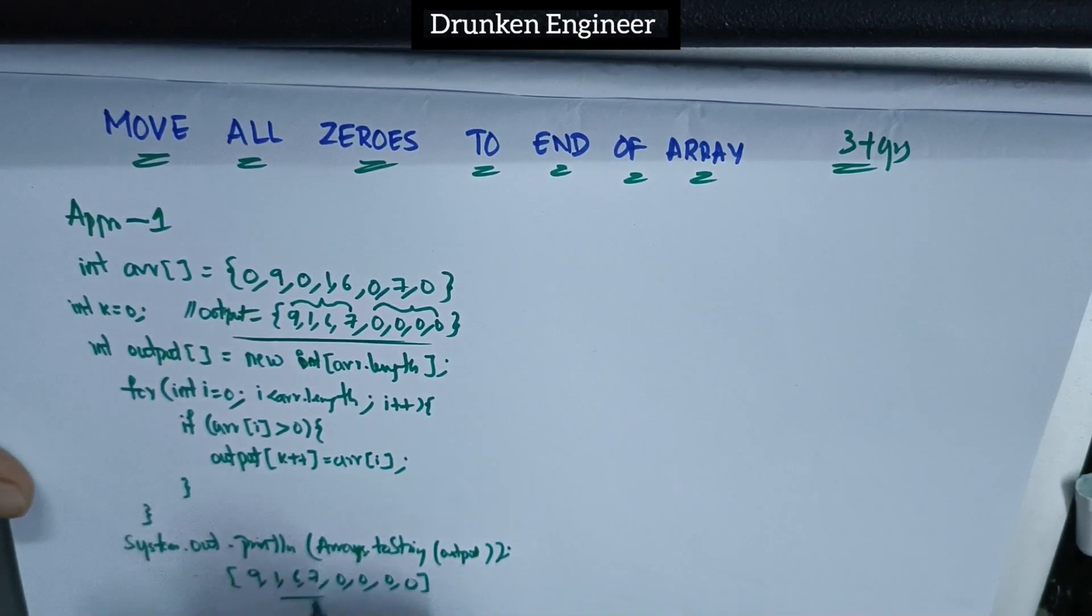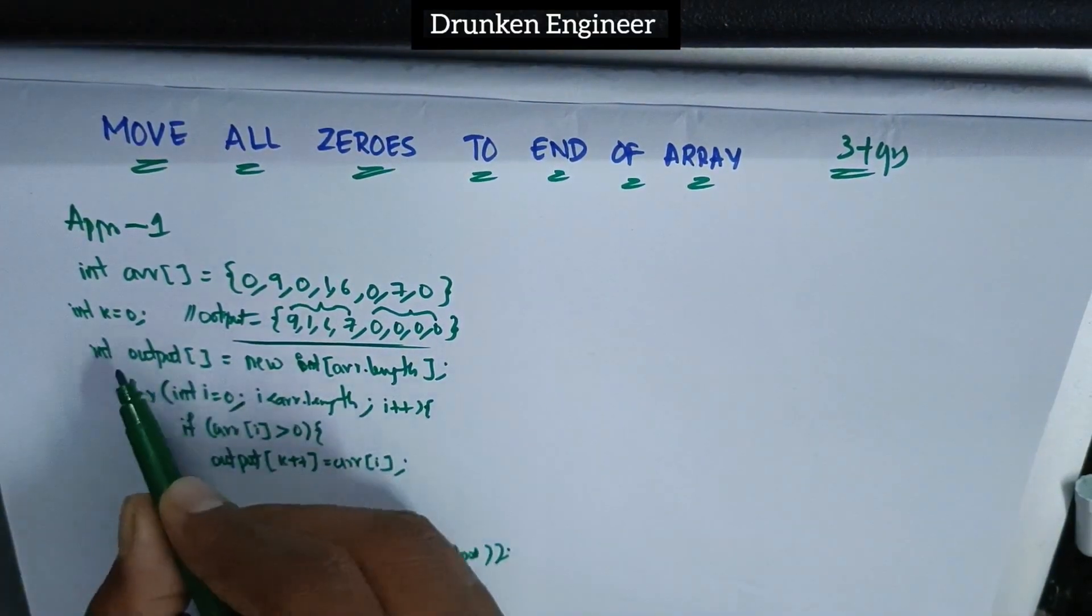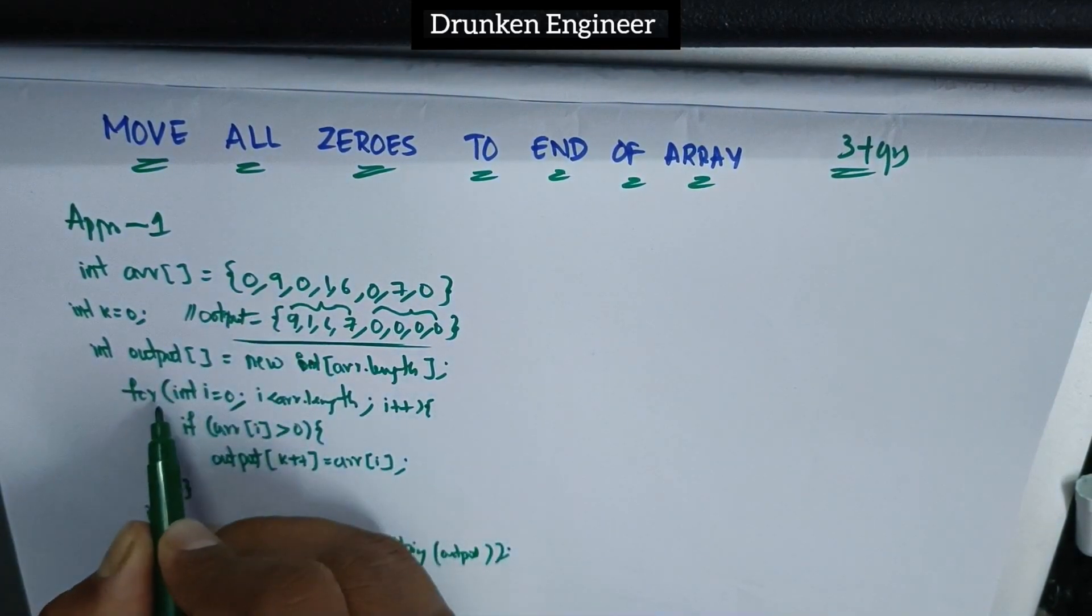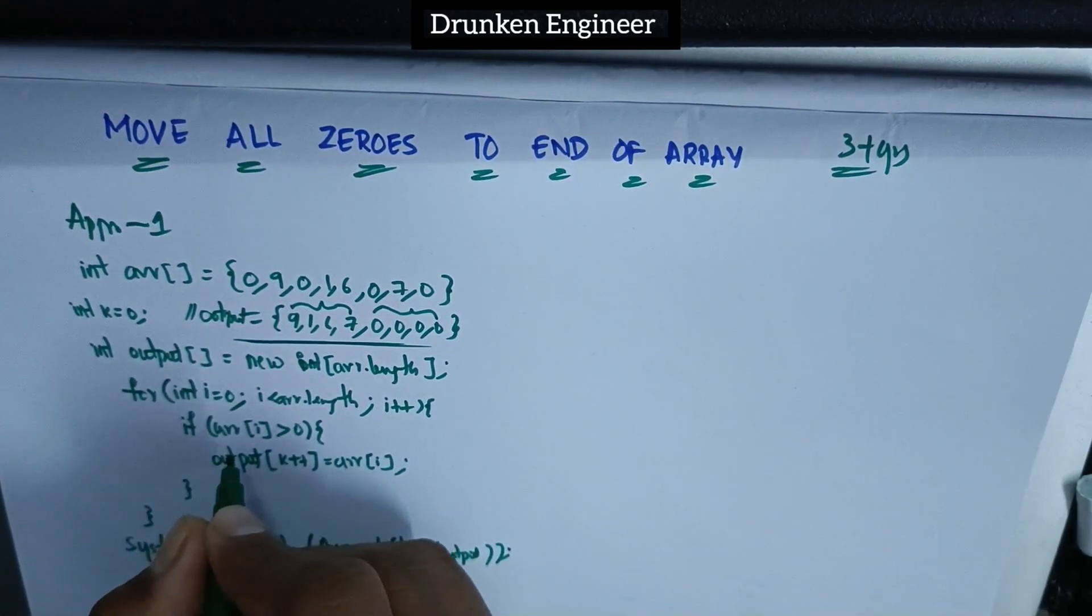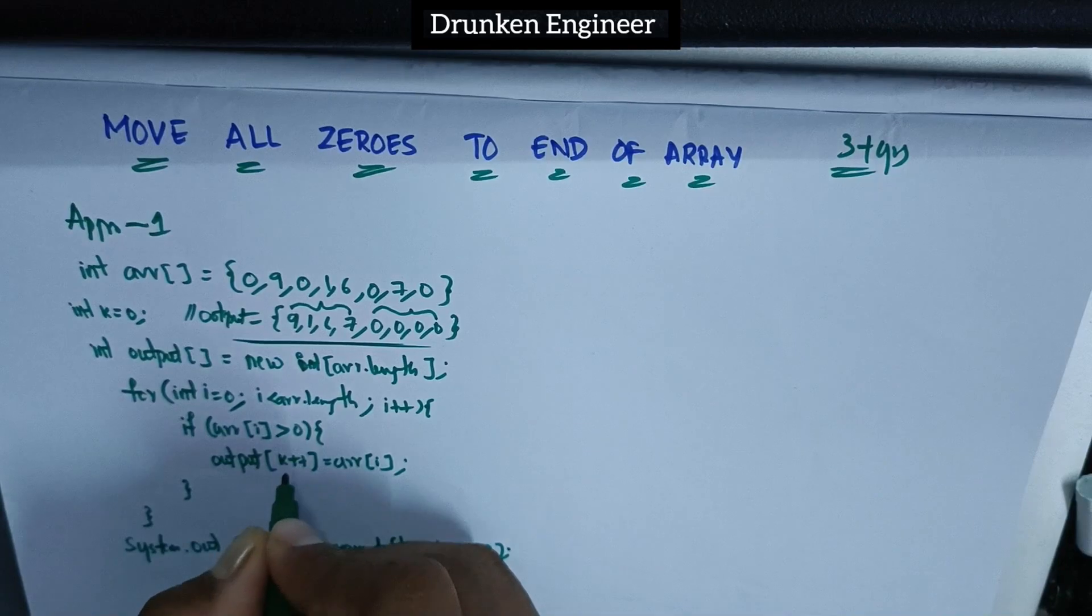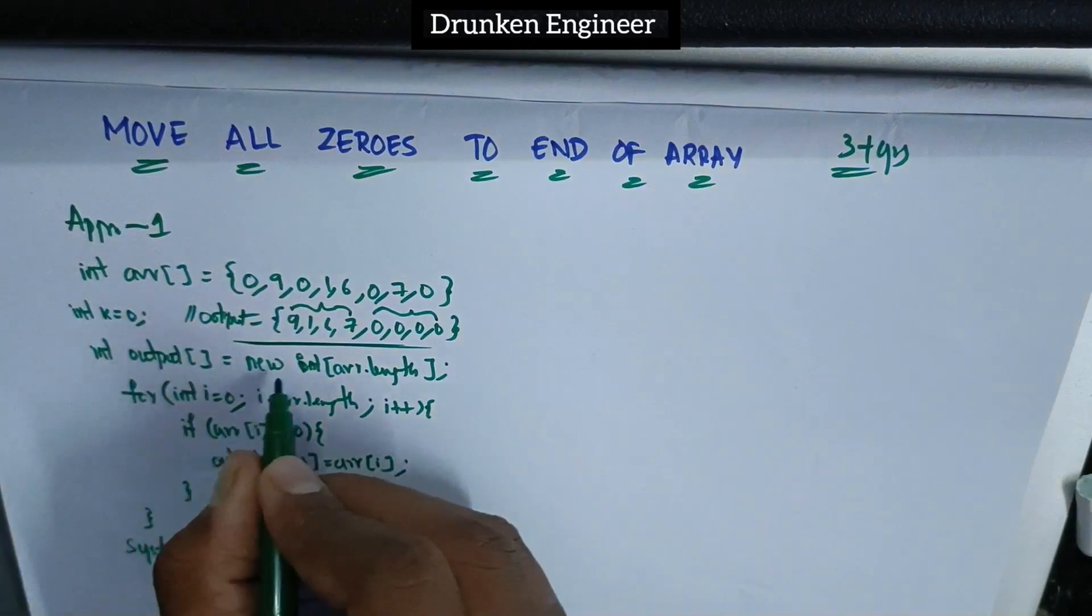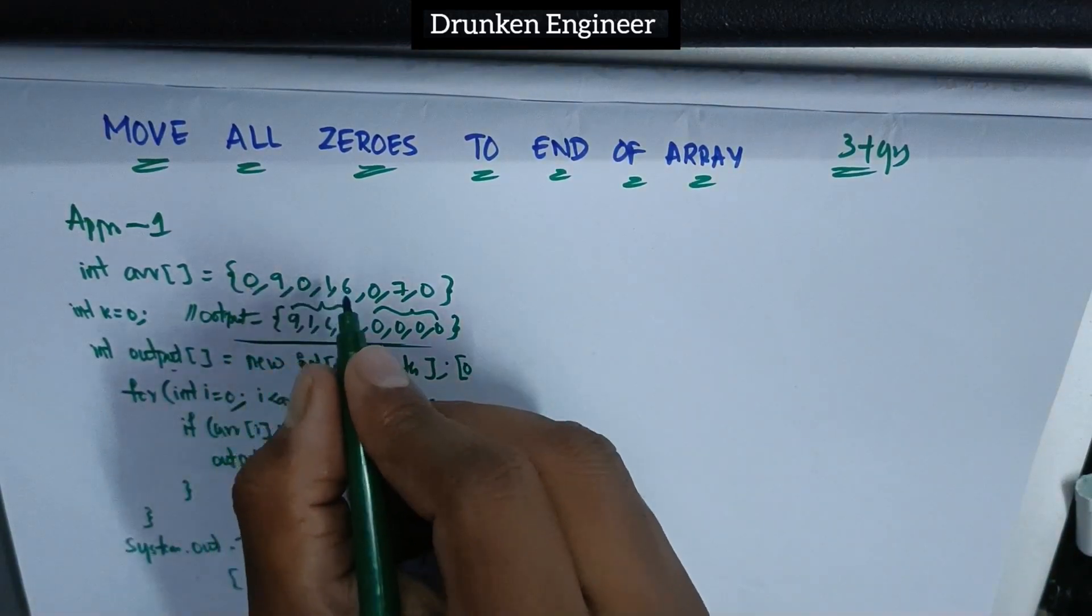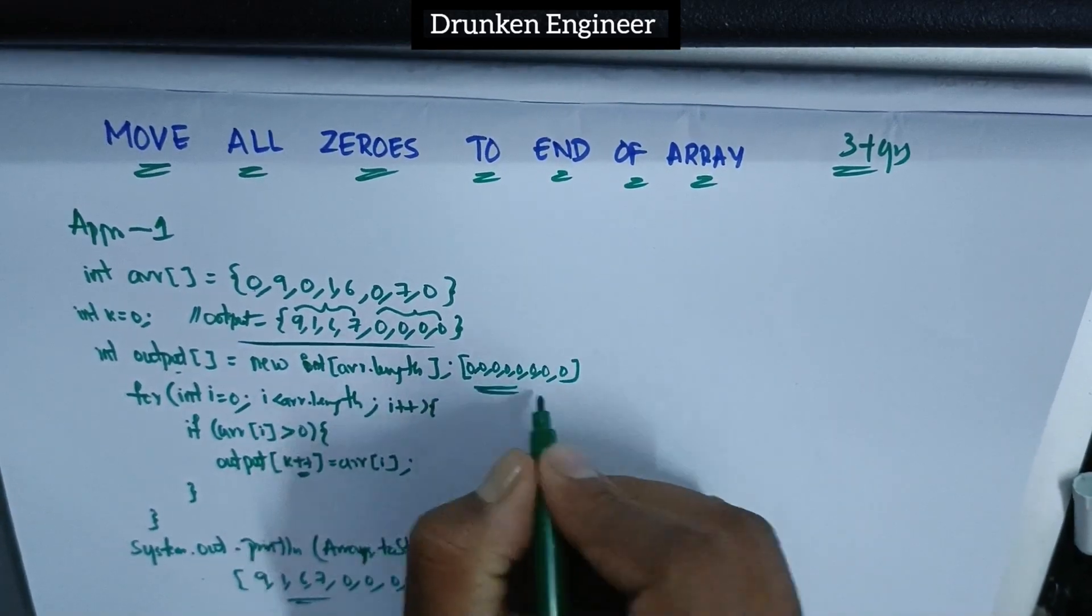What we're doing here: we first declare a variable k, then initialize one more array with the same length as the input array. Using a for loop, I iterate over each element, check if it's greater than zero, then insert it into the output array and increment k. When we initialize this output array, it gets initialized with eight zero elements.